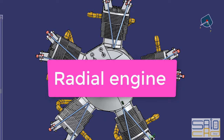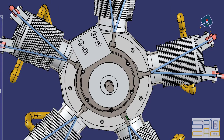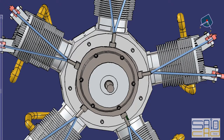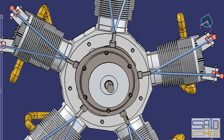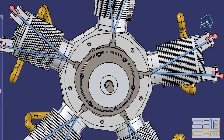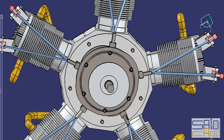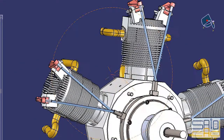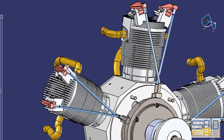The radial engine is a reciprocating type internal combustion engine configuration in which the cylinders radiate outward from a central crankcase like the spokes of a wheel. It resembles a stylized star when viewed from the front and is called the star engine in some languages. The radial configuration was commonly used for aircraft engines before gas turbine engines became predominant.